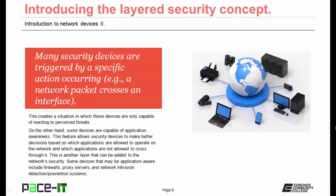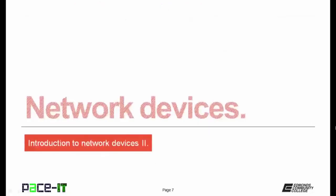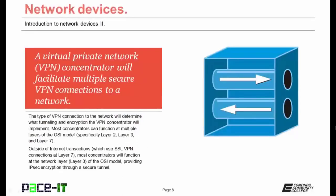Some devices that may be application aware include firewalls, proxy servers, and network intrusion detection systems or network intrusion prevention systems. With that, let's move on to some network devices. We're going to begin by talking about the VPN concentrator. A virtual private network concentrator, or VPN concentrator, will facilitate multiple secure VPN connections to a network. The type of incoming VPN connection will determine what tunneling and encryption the VPN concentrator will implement.